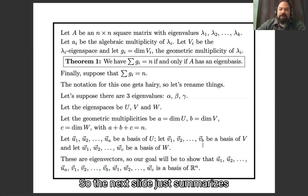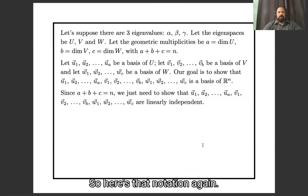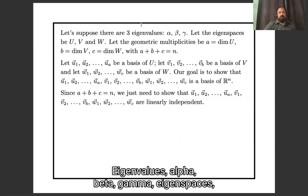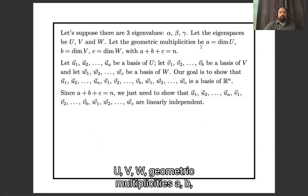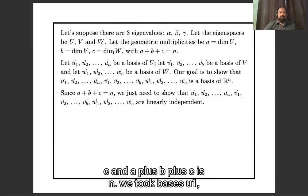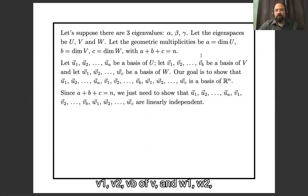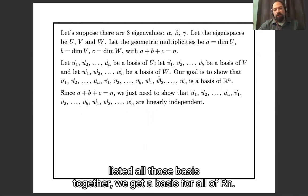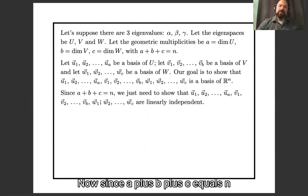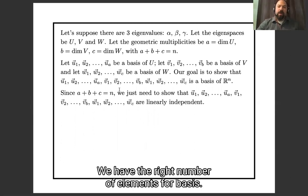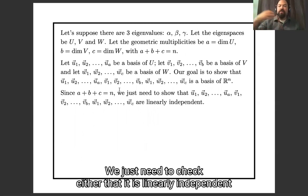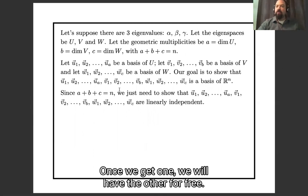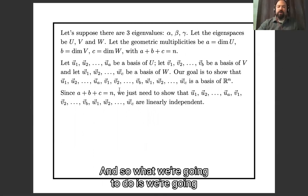Here's the notation: eigenvalues alpha, beta, gamma; eigenspaces U, V, W; geometric multiplicities a, b, c; and a plus b plus c equals n. We take bases u1, u2, ..., ua of U; v1, v2, ..., vb of V; and w1, w2, ..., wc of W, and want to show that listing all of them together gives a basis for R^n. Since a plus b plus c equals n, we have the right number of elements for a basis — we just need to check linear independence, and spanning will follow for free.